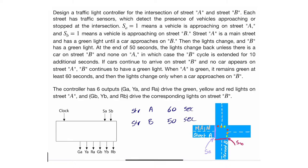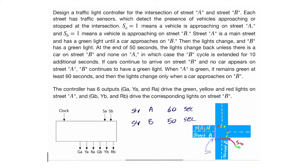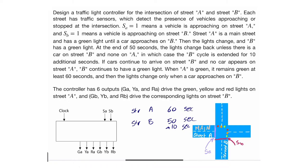Whenever street B is turned on, it should last for at least 50 seconds. After those 50 seconds, if there are still cars on street B and no cars on street A (SB = 1, SA = 0), you add another 10 seconds and keep extending in 10-second increments. The moment a car appears on street A, street B stops — street A always takes priority as the main street.